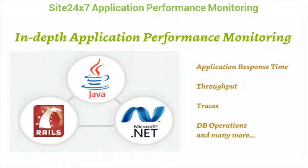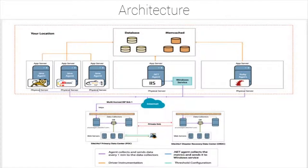Site247's APM Insight supports Java, .NET, and Ruby on Rails applications. It is also integrated with real user monitoring, and there is mobile application performance monitoring for native mobile apps. APM Insight is agent-based monitoring — you install the agent on the app server. Data collection happens every one minute through a one-way HTTPS connection, and collected data is sent to the Site247 server where you can view performance metrics on a dashboard.